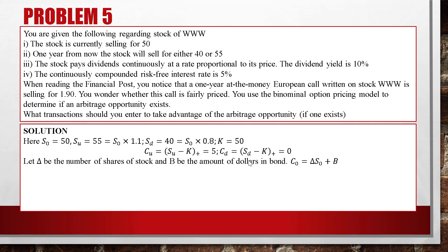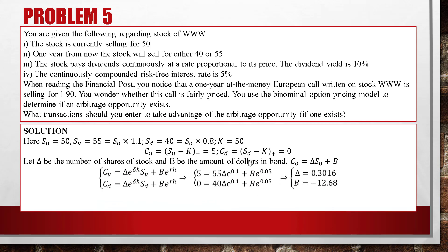Let delta be the number of shares of stock and B the amount of dollars in bond. We construct the system: CU = delta × e^(0.1) × SU + B × e^(0.05), and CD = delta × e^(0.1) × SD + B × e^(0.05). So 5 = 55δ × e^(0.1) + B × e^(0.05), and 0 = 40δ × e^(0.1) + B × e^(0.05). Solving: delta = 0.3016 and B = −12.68.